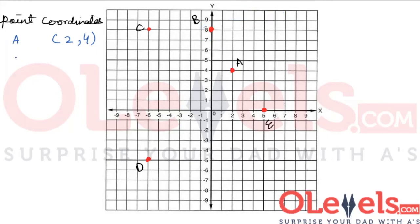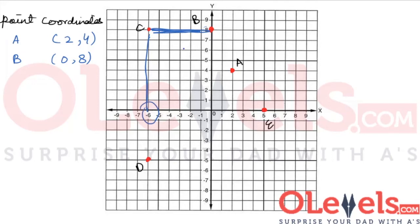Let's write this down. Point B has the coordinate (0, 8). Now let's look at point C. Point C has an x value of minus 6 and a y value of 8. We can observe that it lies on the same height as point B, because point B and C have the same y value. So the coordinates of point C are (minus 6, 8).